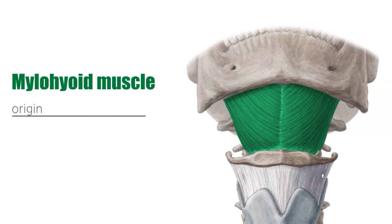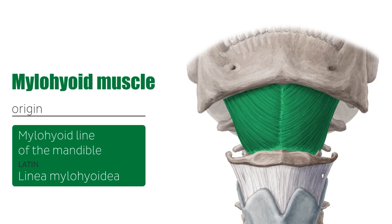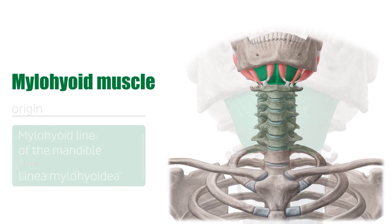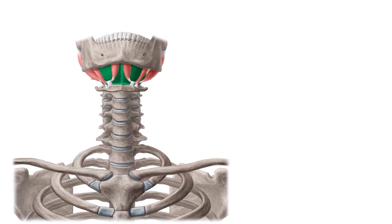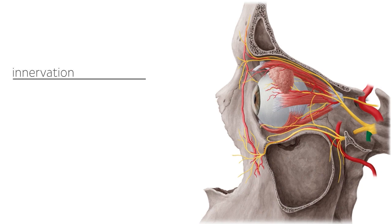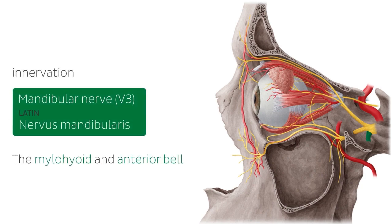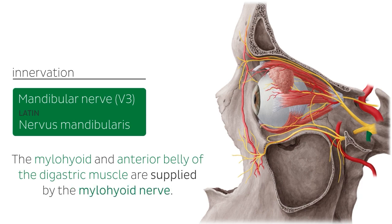The next muscle we are going to look at is mylohyoid. It originates from the mylohyoid line of the mandible, which is present on the inner surface of the mandible. The muscle fibres run to a median tendon known as the mylohyoid raphe, where both parts of the muscle meet. The mylohyoid raphe continues its course and inserts on the body of the hyoid bone. The mylohyoid muscle and the anterior belly of the digastric muscle are supplied by the mylohyoid nerve, which is a branch from the mandibular nerve, one of the three branches of the trigeminal nerve, cranial nerve 5.